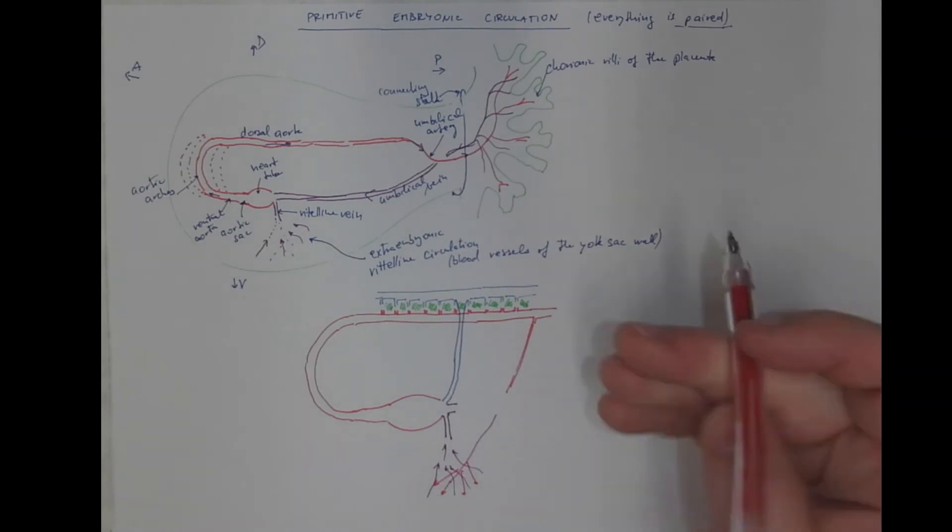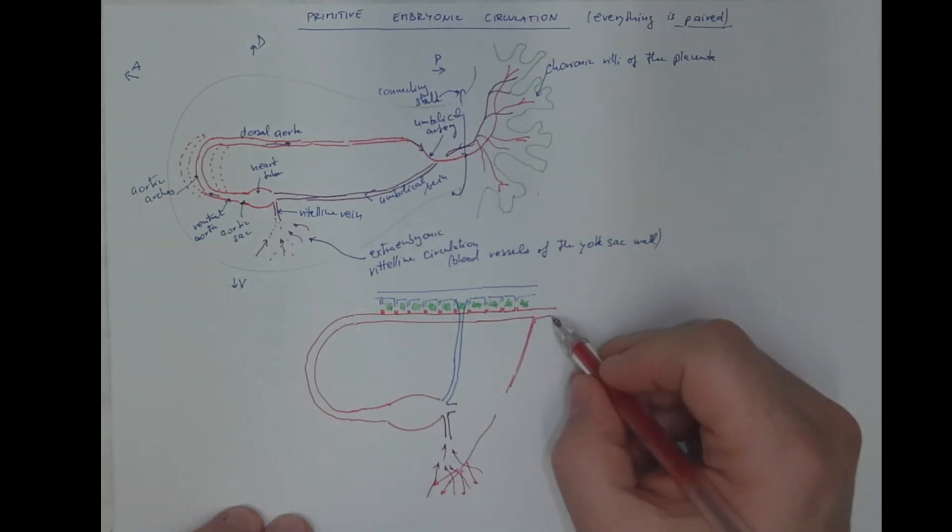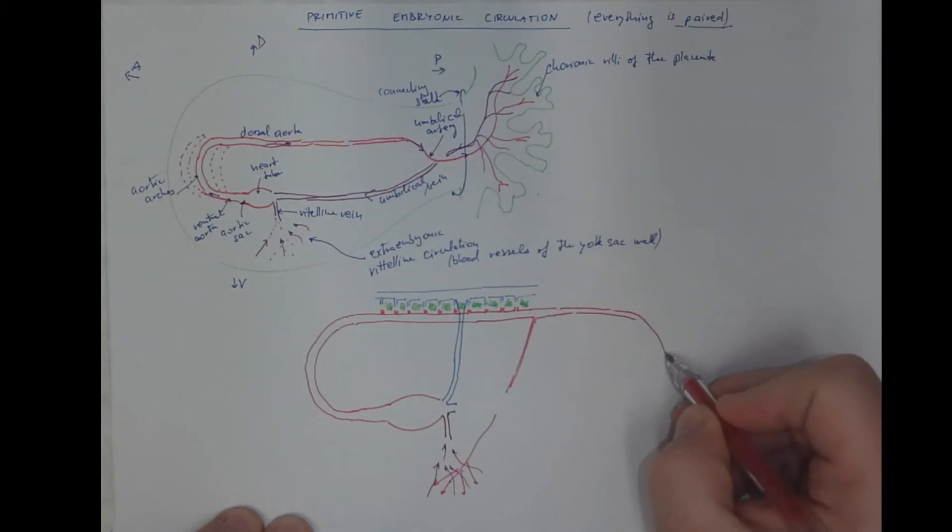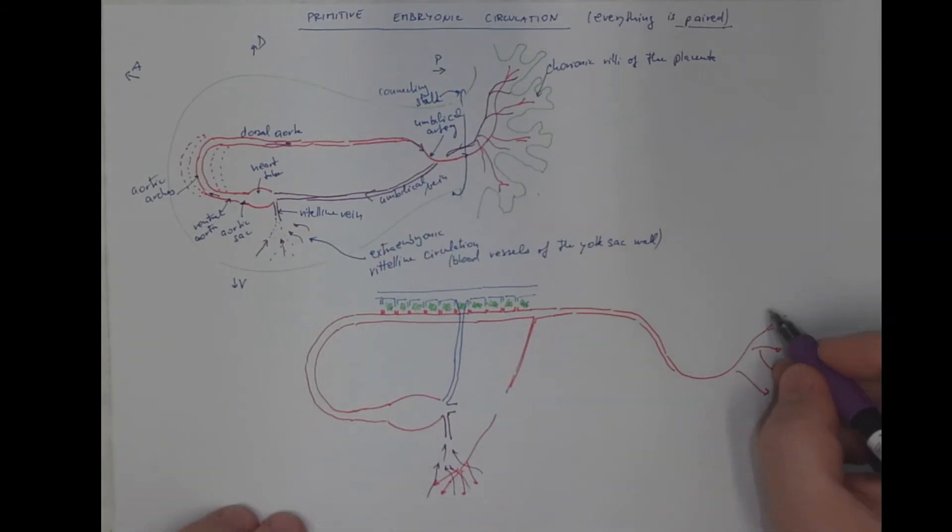If we follow the dorsal aorta, we come to the umbilical artery. It goes to the placenta circulation. The blood returns back via the vitelline vein.